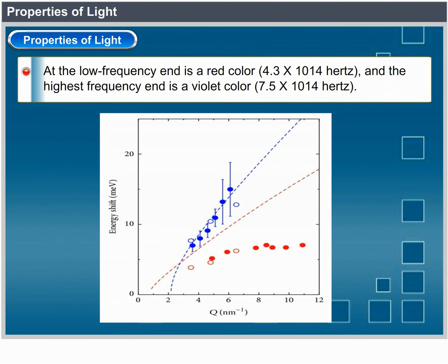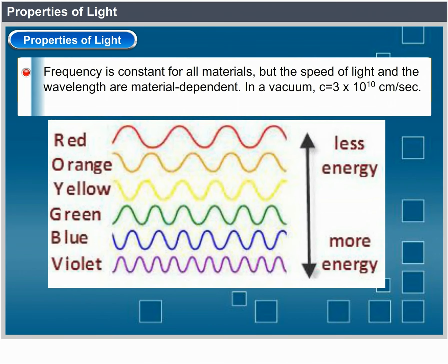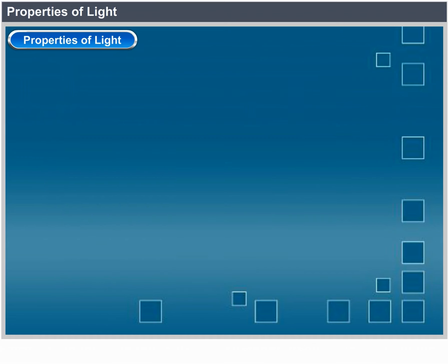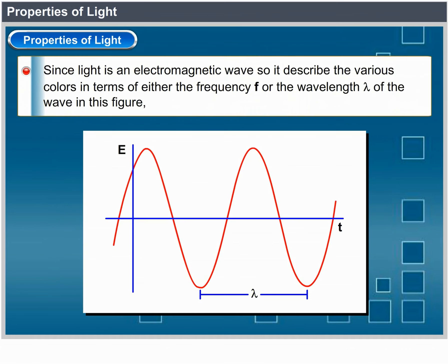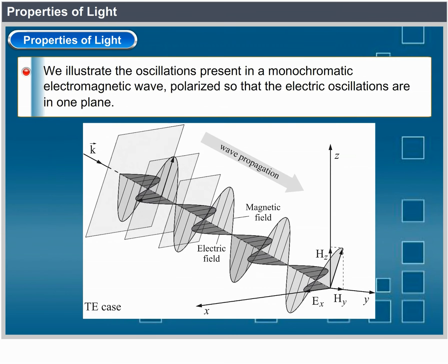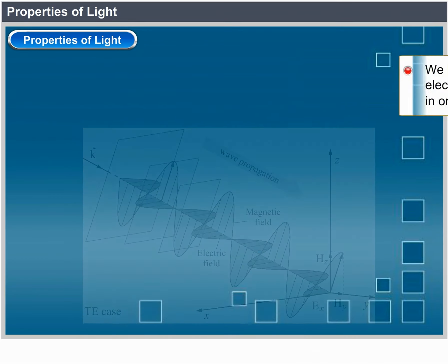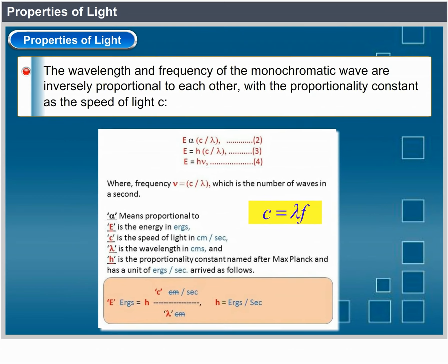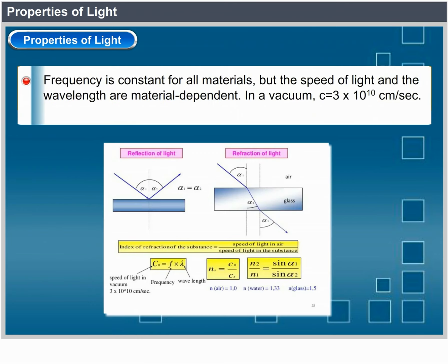At the low frequency end is red at 4.3 × 10¹⁴ Hz, and the highest frequency visible is violet at 7.5 × 10¹⁴ Hz. Spectral colors range from reds through orange and yellow at the low-frequency end to greens, blues, and violet at the high end. Since light is an electromagnetic wave, we can describe colors in terms of either frequency f or wavelength λ. The wavelength and frequency of a monochromatic wave are inversely proportional with proportionality constant c, the speed of light: c = λf. Frequency is constant for all materials, but the speed of light and wavelength are material dependent. In a vacuum, c equals 3 × 10¹⁰ centimeters per second.